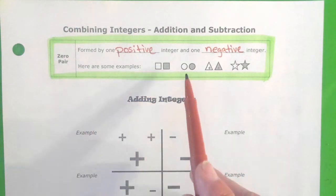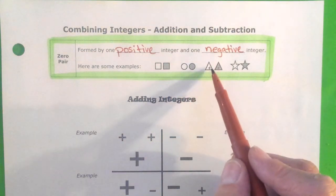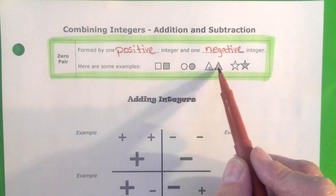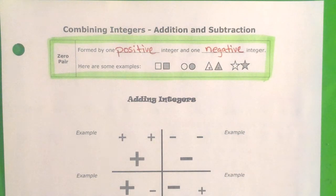They could be in rectangles. I draw circles all the time because that's a fast shape. They could be triangles. They could have pluses, minuses, or they could just be unshaded and shaded. So one positive, one negative, put them together, you get a zero pair.